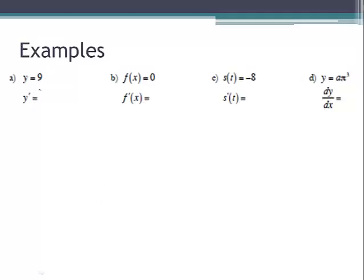You've got four examples here. The slope of y equals 9 is zero. The slope of f of x equals 0 is zero. The slope of s of t equals negative 8 is zero. The slope of y equals 8π³ is also zero, because π³ is just a number — it's not x.